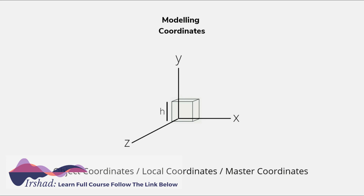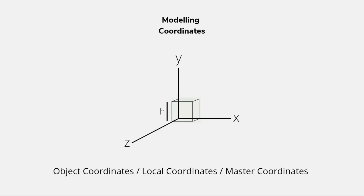Modeling coordinates are also called object coordinates, local coordinates, or master coordinates. In this system, the origin of the axis should always lie on the surface of the object or inside the object — it shouldn't lie outside. Using modeling coordinates we can exactly measure the dimensions of the object. It is used to create and design the object. Here you can see that the origin lies at this vertex, and we can determine how tall it is.